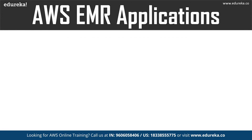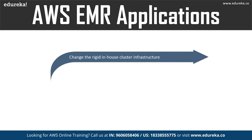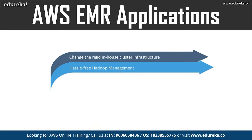The first EMR application is changing rigid in-house cluster infrastructure. Running the same complete cluster infrastructure anytime you need to analyze big data, regardless of the analysis scope, is a waste of resources unless you have elastic clustering configured. EMR is more resource efficient. The second is hassle-free Hadoop management — with Hadoop fully managed on EMR, you remove the time and complexity of in-house management such as upgrades, maintenance, node failures, and operational costs.